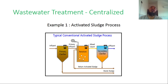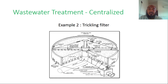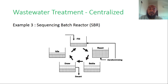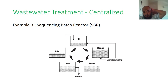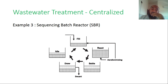For centralized systems, we can use the activated sludge process, trickling filter, or the Sequencing Batch Reactor — SBR. The Sequencing Batch Reactor is a fill-and-draw reactor where all treatment processes occur in one single tank.